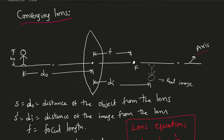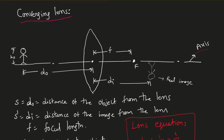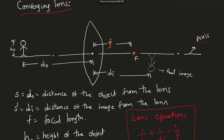For a converging lens, the focal point is always behind the lens. The focal point is where light can be focused. The distance from the lens to the focal point is called the focal length, indicated with F. Here is an object — I'm showing it with a picture of a person — and D_o is the distance of the object from the lens.